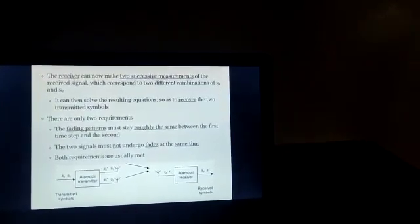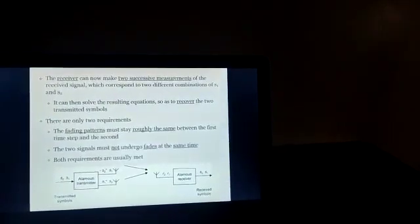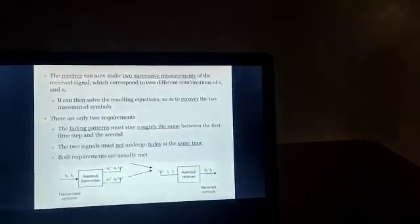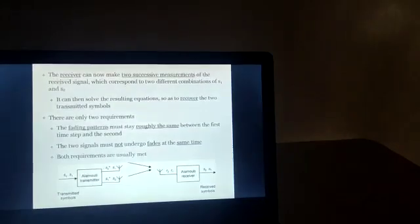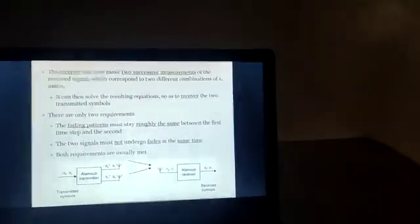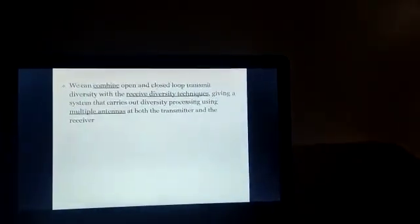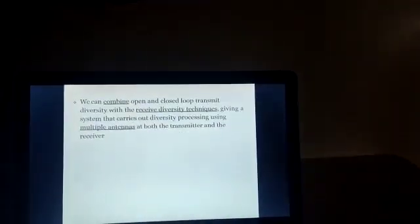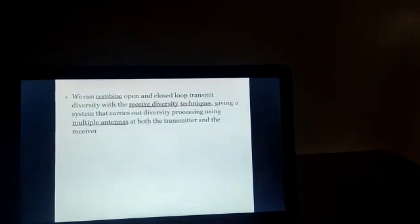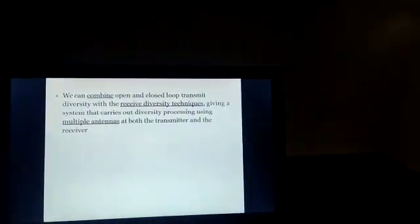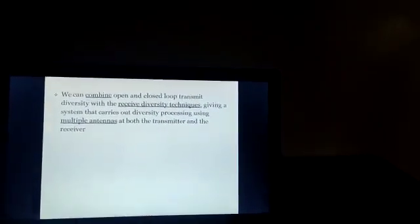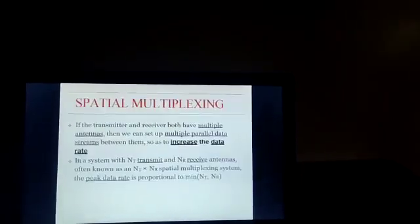There are only two requirements: number one, the fading pattern must stay roughly the same between the first step and the second step; and number two, the two signals must not undergo fades at the same time. Both requirements are usually met. We can combine both open-loop and closed-loop transmit diversity with receive diversity techniques, giving a system that carries out diversity processing using multiple antennas at both the transmitter and the receiver.